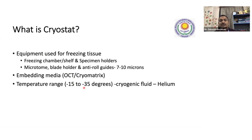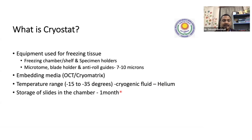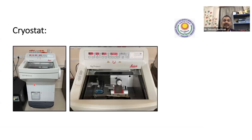This is how a cryostat looks. Different companies manufacture them; we use a Leica cryostat, which is a very costly equipment. You can see the vials or normal saline bottles in which specimens come. The temperature right now is maintained at minus 23. Here is the blade, the chuck holder where we put the tissue, and this is the peltier chamber where the freezing of the tissue is done.